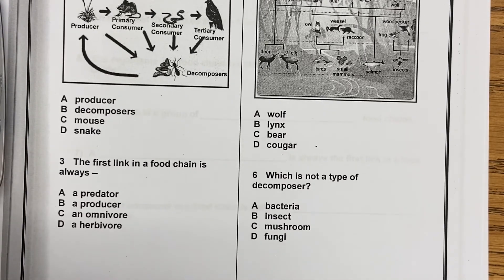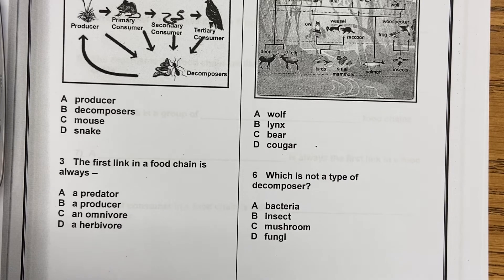Number six: Which is not a type of decomposer? A, bacteria; B, an insect; C, a mushroom; or D, a fungi. A fungi is just the plural of fungus. So you're going to go back to paragraph six to find that answer because paragraph six is the one about decomposers.